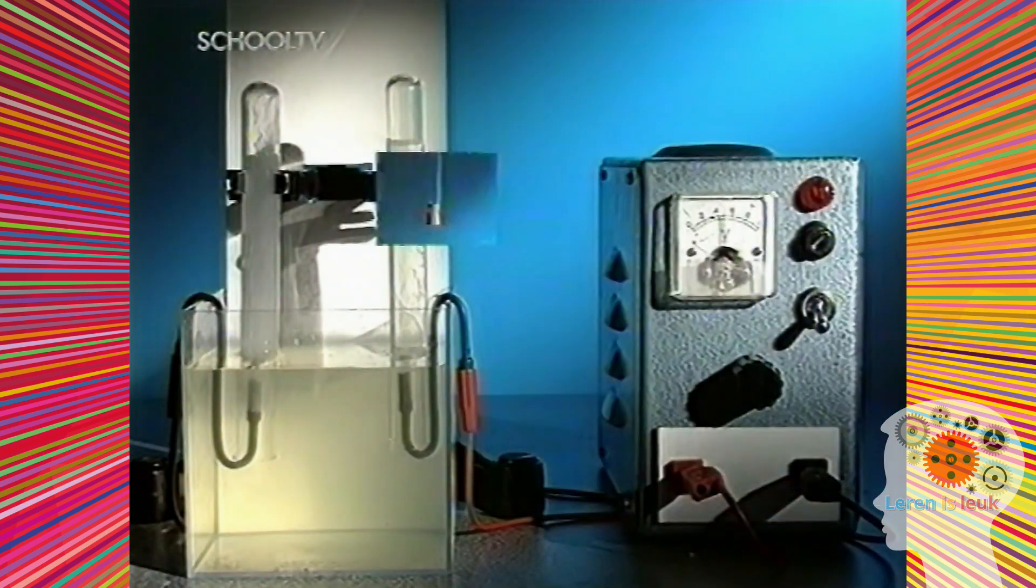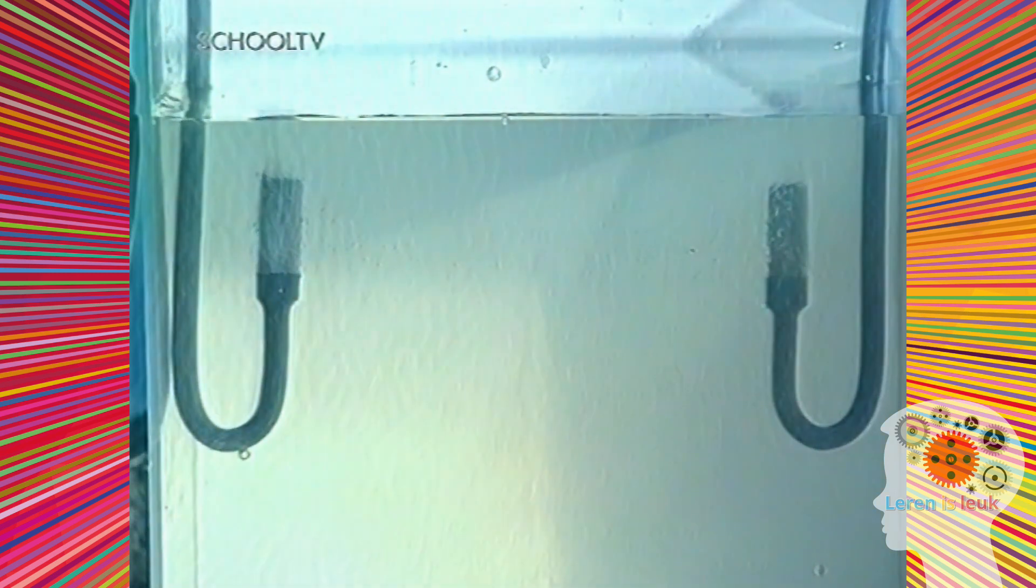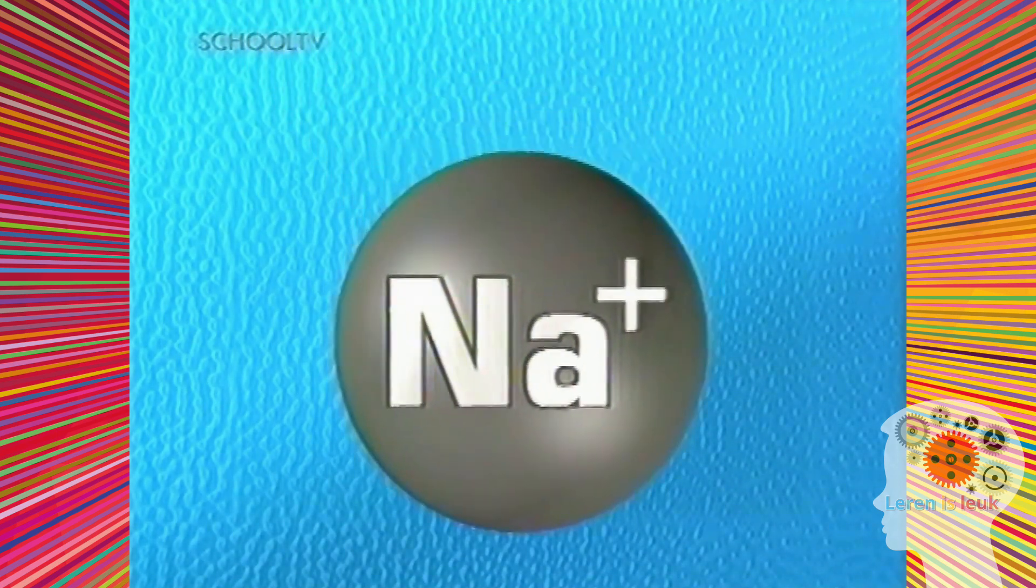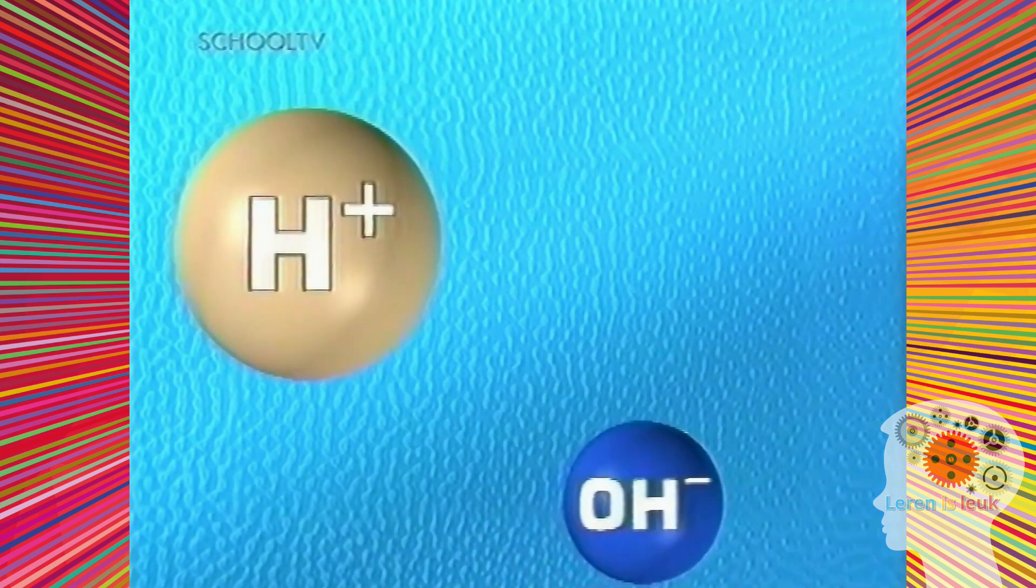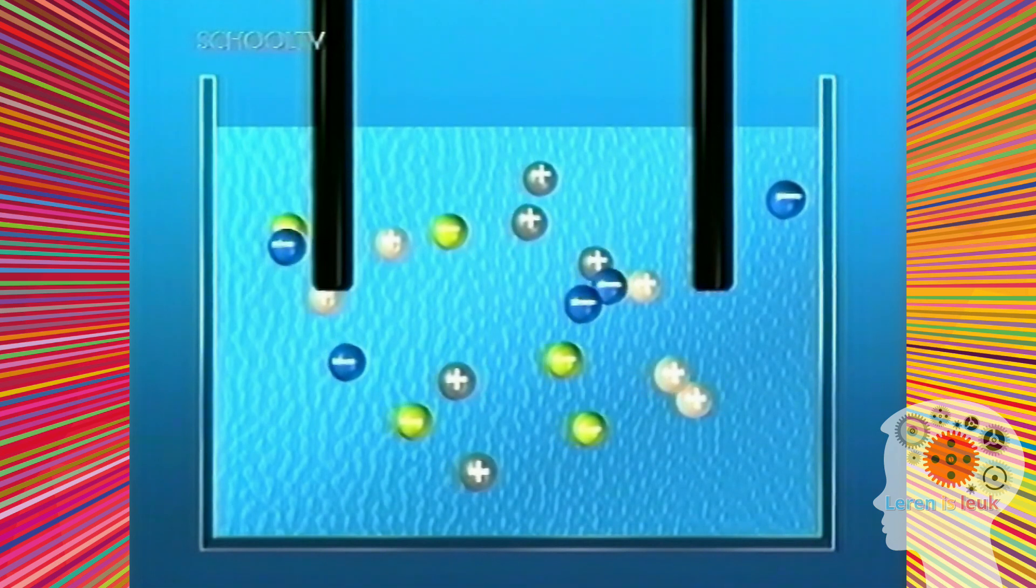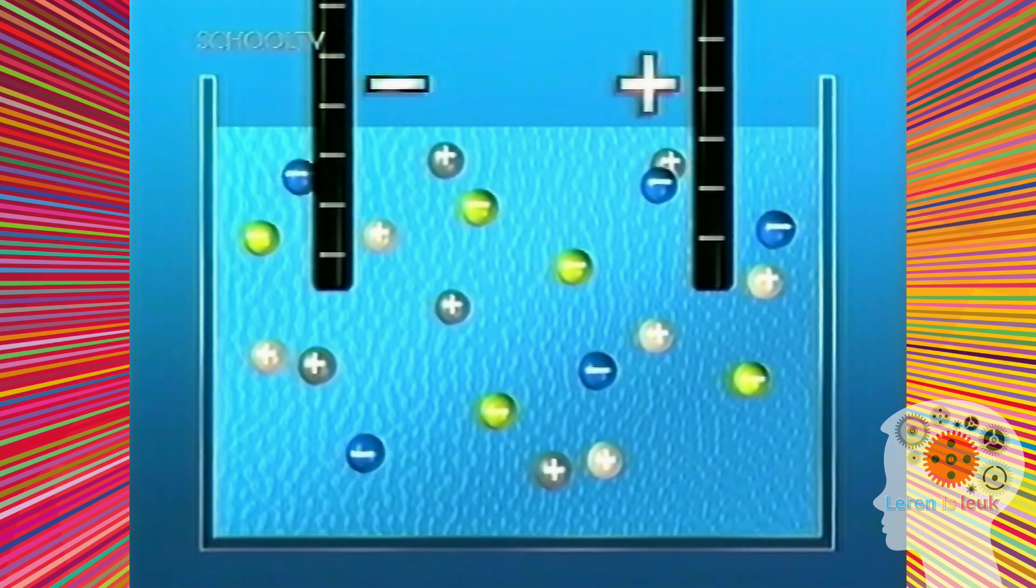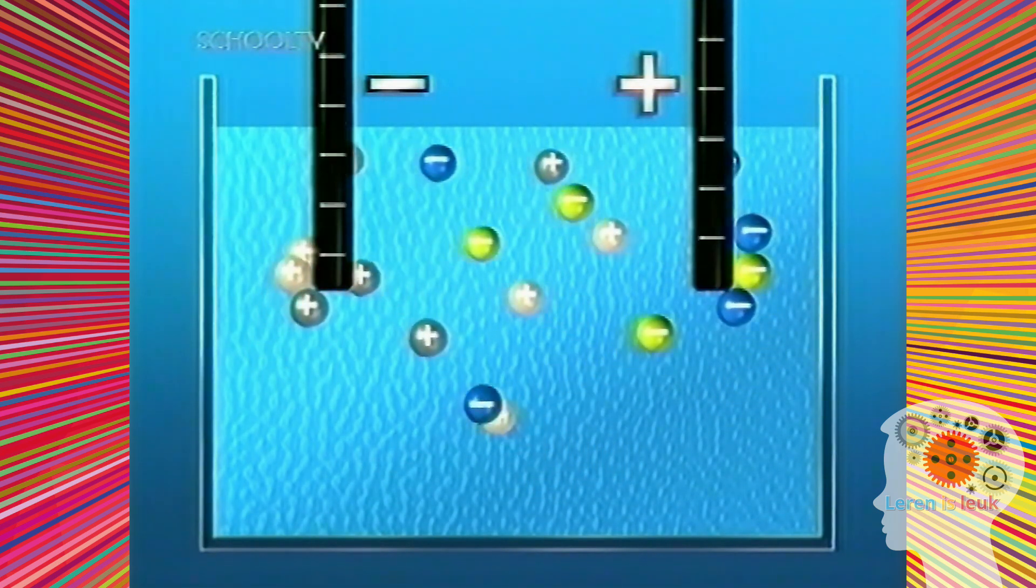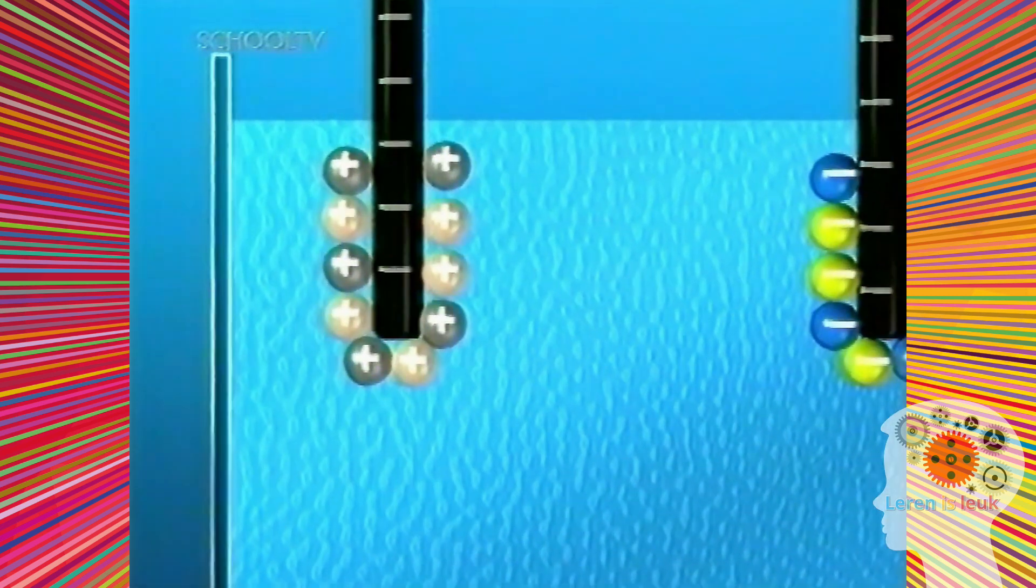Hoe komt het dat er bij de elektrolyse van een natriumchloride oplossing waterstof en chloor ontstaan? Stel je eens voor dat je de geladen deeltjes in de vloeistof kunt zien. Er zijn natriumionen die positief zijn en chloride-ionen die negatief zijn. De anderen zitten in het water. Positieve waterstofionen en negatieve hydroxide-ionen. Al die verschillende geladen deeltjes kunnen zich vrij bewegen.